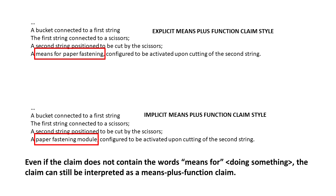So what we see at the bottom may be an implicit means plus function claim style. Even though we don't have the words means plus function in the claim, we are using a generalized word like module, which could trigger the interpretation of the claim as means plus function.